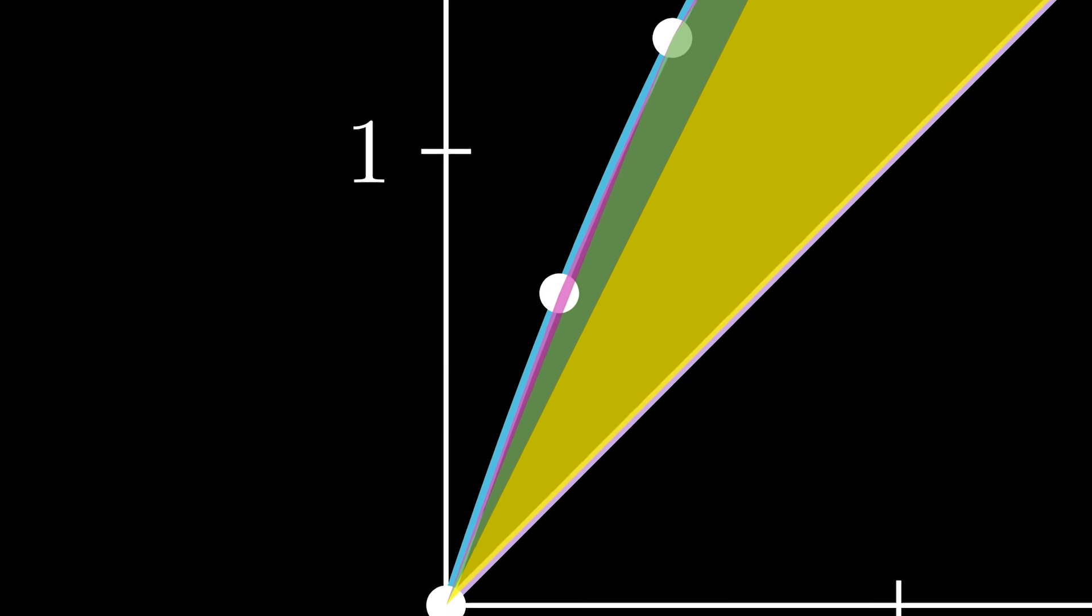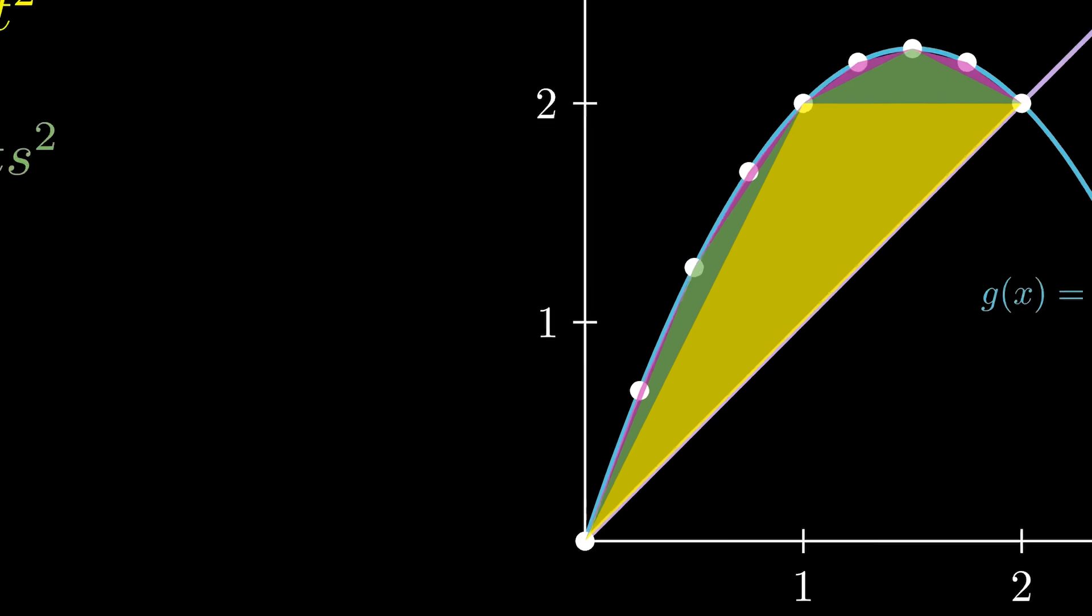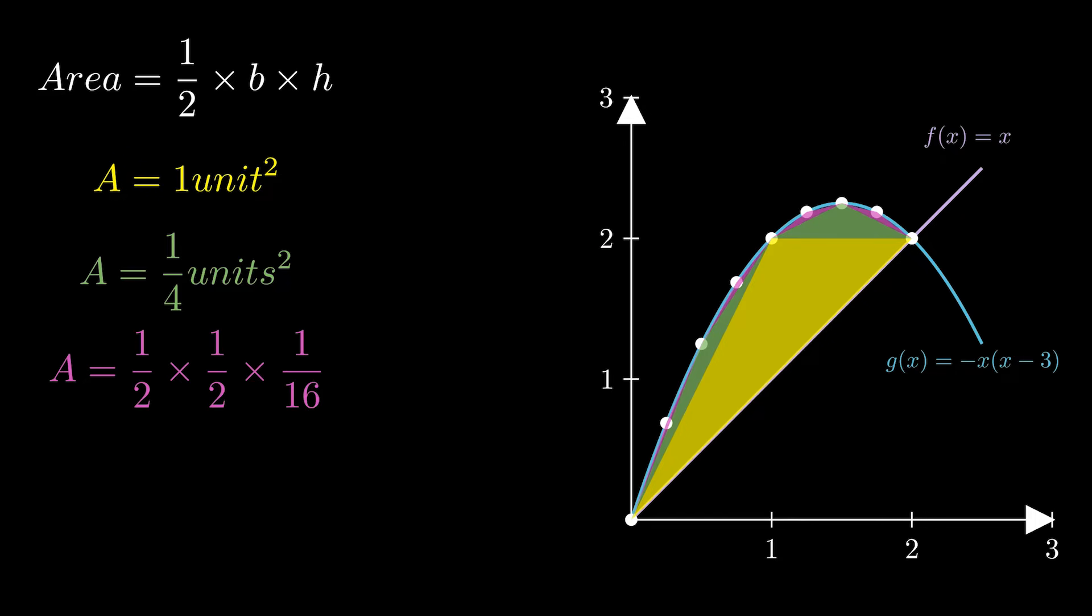Then you do the same thing. You've got this purple guy there, there's four of them. The base is a half. Each height is 1/16th. That's gonna give you 1/64th, but there's four of them, so you get 1/16th.